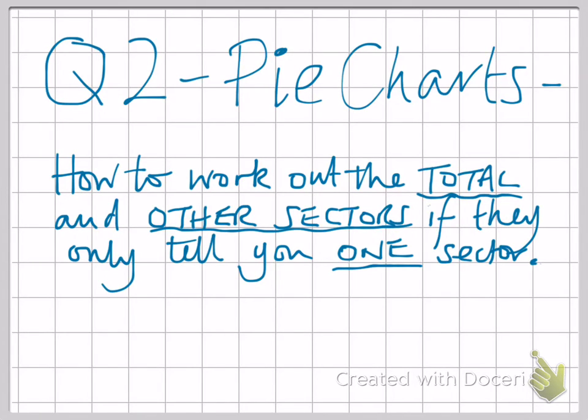Q2 helps you out if they tell you how many people are part of one sector of a pie chart and you've got to work out the total and also any other sector.